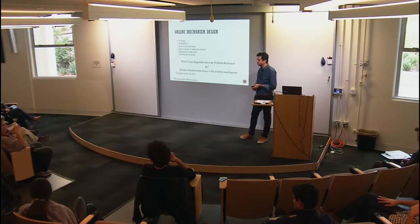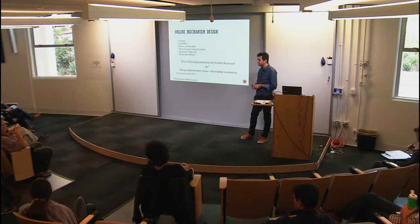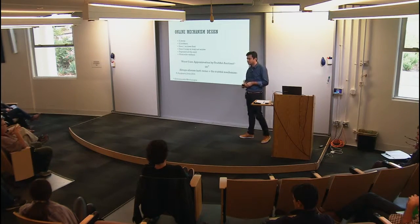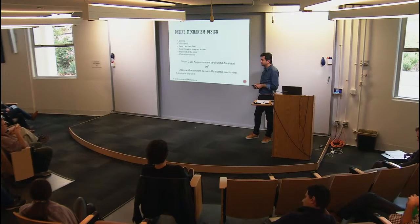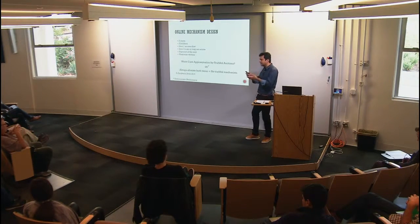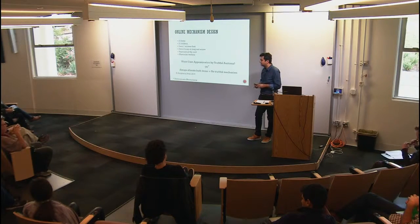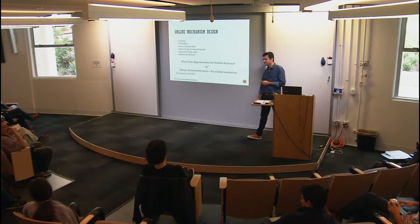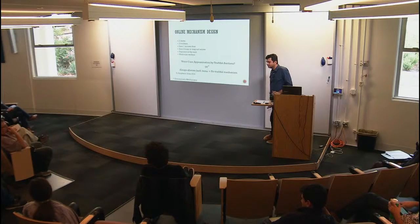Q&A: Are there models where the value of a click depends on the price being paid — since lower bids only win things nobody else wants, while higher bids win higher-value things? This is related to interdependent or common values. People have studied this in the offline single-auction setting, but incorporating this into the online setting hasn't been done. Thanks again.